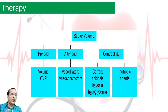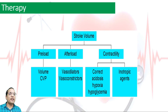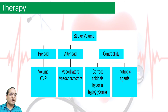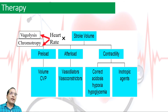Therapeutically, stroke volume can be increased by increasing preload, reducing afterload, or improving contractility. Preload can be increased by volume or maintaining CVP. Afterload can be modified by vasodilator or vasoconstrictor drugs. Cardiac contractility may be corrected by correction of acidosis, hypoxia, or hypoglycemia, and inotropic agents can be used. Cardiac output can also be increased by modulating heart rate through vagolysis.